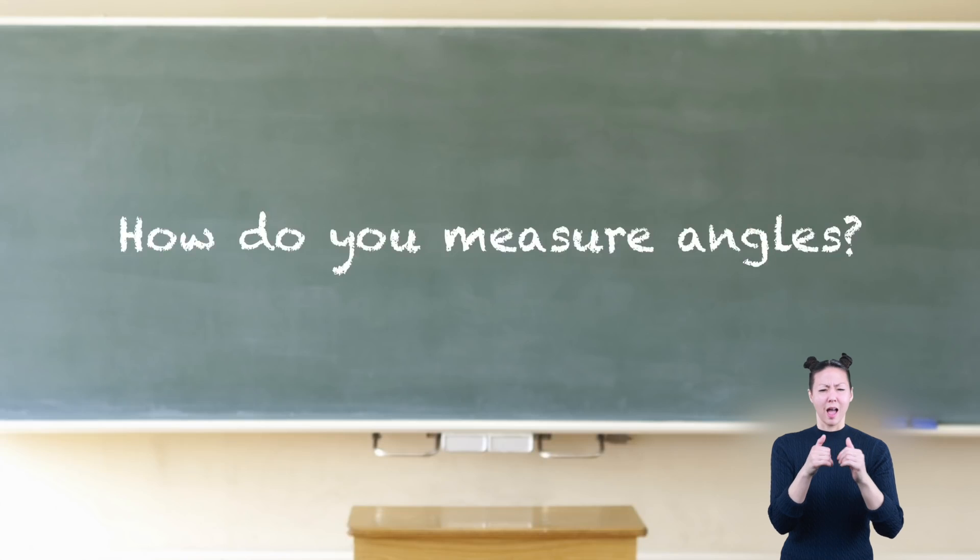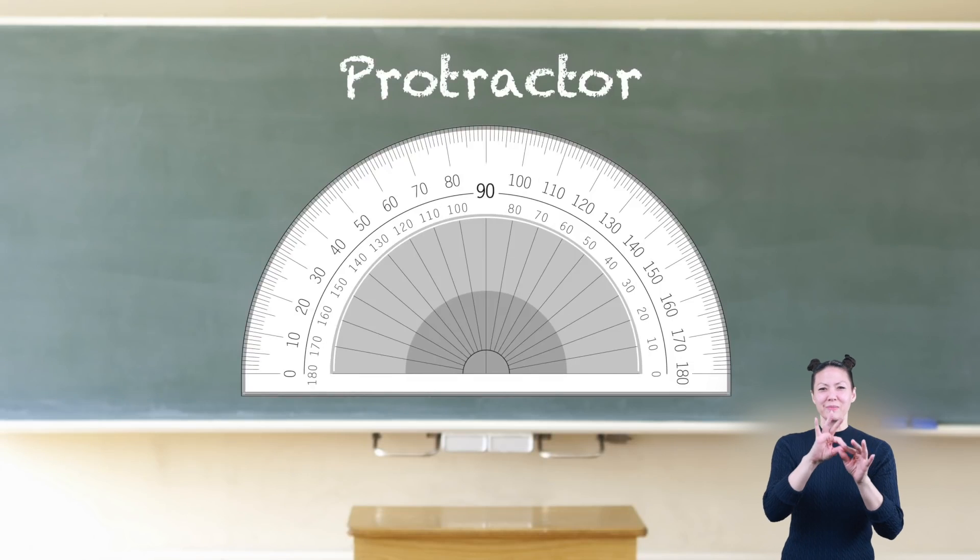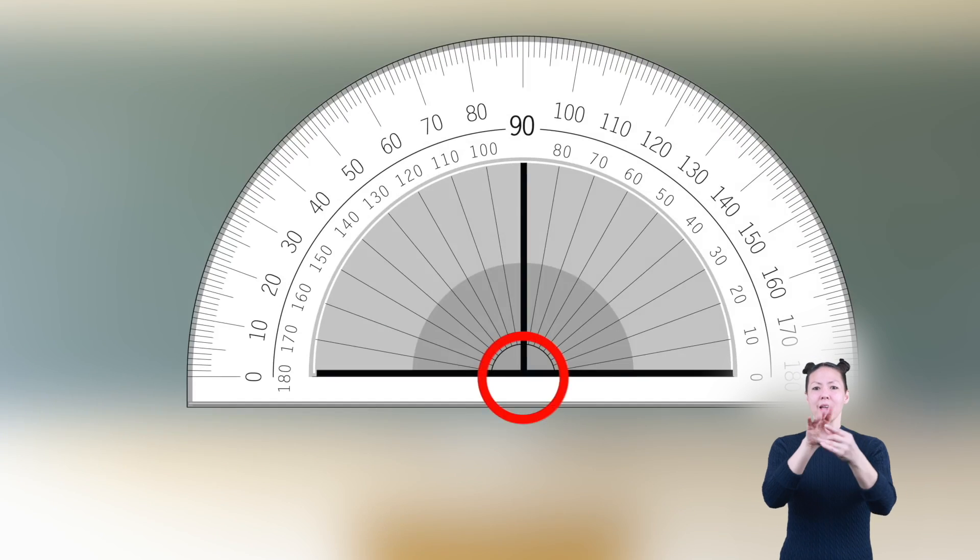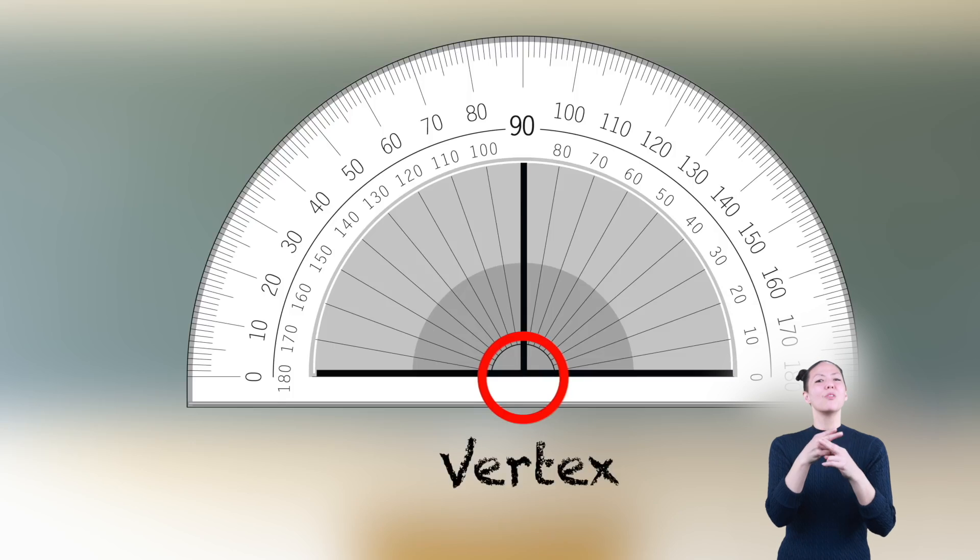How do you measure angles? With a protractor. A special tool called a protractor measures angles in degrees. Protractors are easy to use—simply read the measurements shown. Align the center of the protractor with the vertex of the angle.